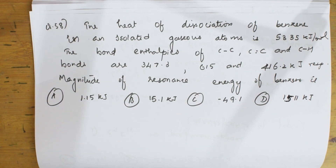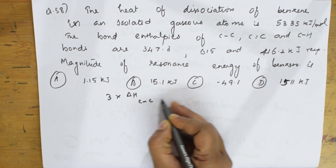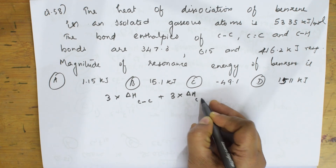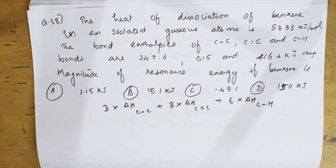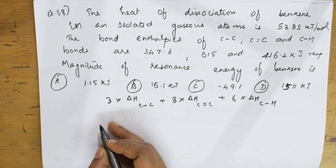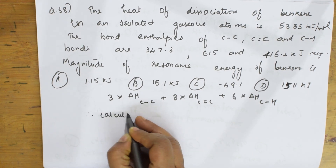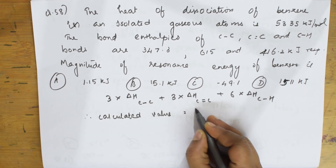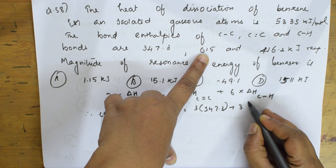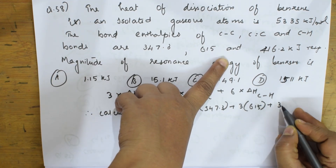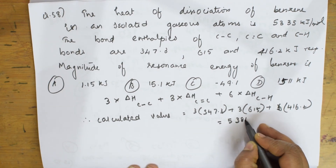The formula for calculating the expected bond dissociation enthalpy is: 3×ΔH(C–C) + 3×ΔH(C=C) + 6×ΔH(C–H). Substituting: 3×347.3 + 3×615 + 6×416.2, which gives a calculated value of 5,384.1 kJ/mol.